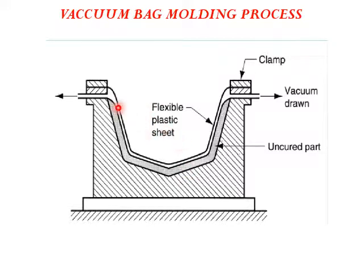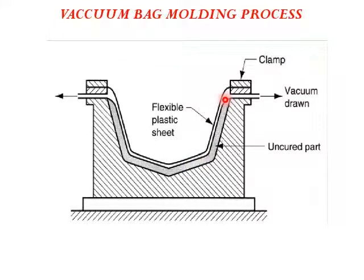Then a flexible plastic sheet is placed above the layup, clamped at both ends to the mold cavity. Once clamped, vacuum is drawn from the openings using a pump. This removes air particles inside the composite material, ensuring there are no trapped air voids in the end product. The flexible plastic sheet — called the bag — covers the product, preventing contamination compared to the open mold process, and the vacuum compacts the end product uniformly.